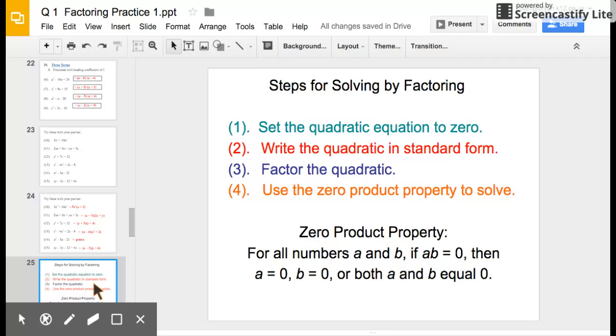And then we want to factor the quadratic. Once we have that, we're going to use that zero product property to solve. So basically, we're going to set them both equal to 0, both of those parentheses once we've factored. So let's check it out.